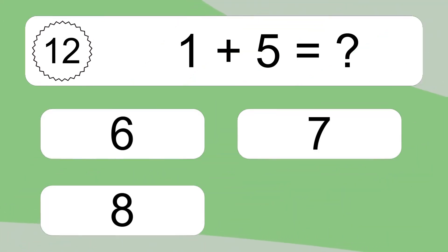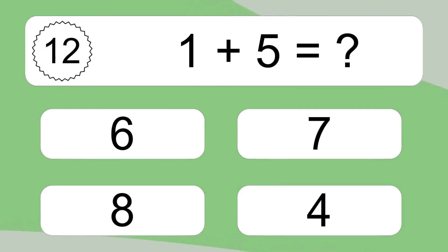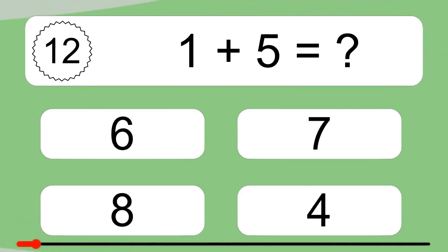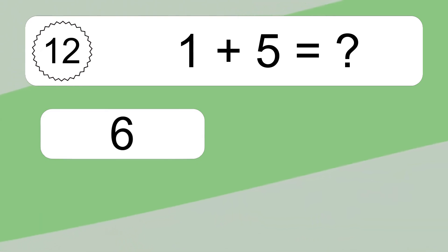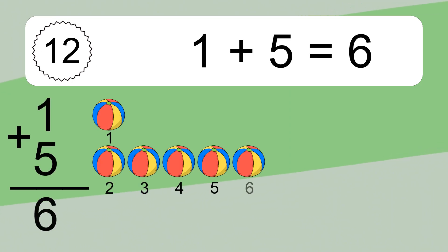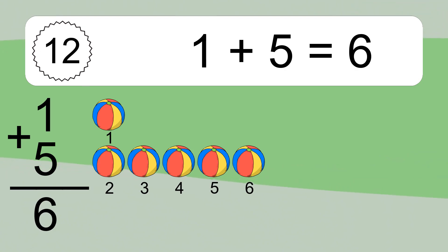1 plus 5 equals what? 1 plus 5 equals 6. Let's count it: 1, 2, 3, 4, 5, 6.